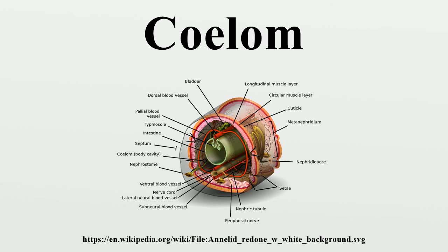Animals can be classified in three informal groups according to the type of body cavity they possess in a non-taxonomic, utilitarian way. Coelomate animals have a fluid-filled body cavity called a coelom, with a complete lining called peritoneum derived from mesoderm. The complete mesoderm lining allows organs to be attached to each other and suspended in a particular order while still being able to move freely within the cavity. Most bilaterian animals, including all the vertebrates, are coelomates.